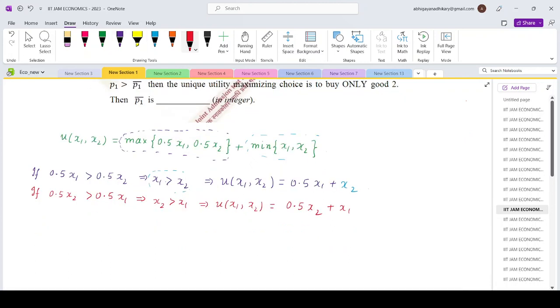So that means basically if you see this utility function, u of x₁, x₂ can now be written as 0.5x₁ plus x₂ when x₁ greater than x₂, and it is x₁ plus 0.5x₂ when x₂ is greater than x₁ or x₁ is less than x₂.